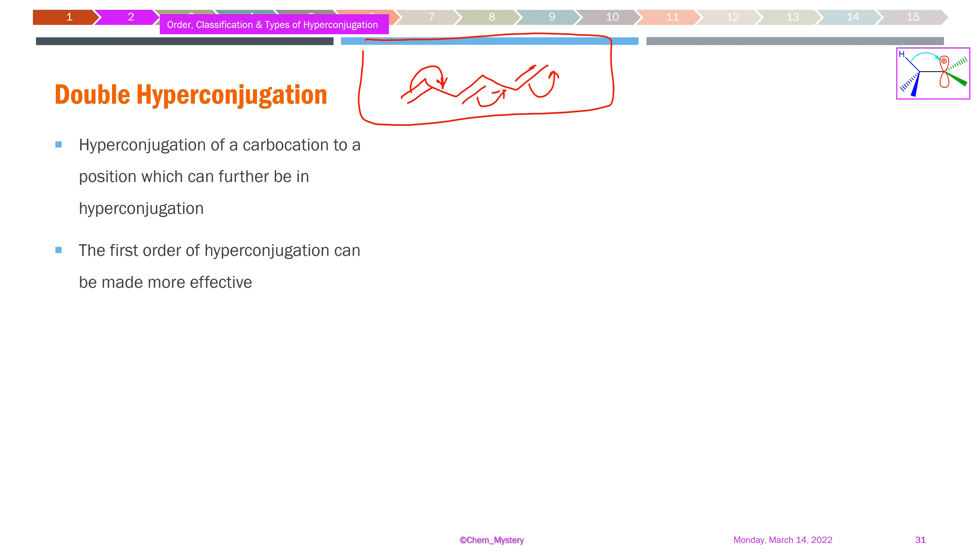Let's examine how this is possible. Double hyperconjugation can be achieved with better electron donor groups, and silicon is our preferred choice.